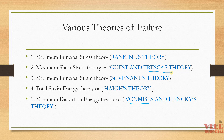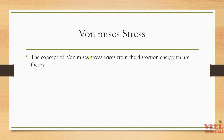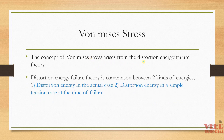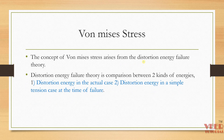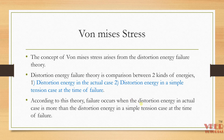Let's understand what the Von Mises Theory is. According to the Von Mises Theory, the concept of Von Mises Stress arises from the Distortion Energy Failure Theory. This theory compares two kinds of energy: the distortion energy in the actual case and the distortion energy in a simple tension case. According to this theory, failure occurs when the distortion energy in the actual case is greater than the distortion energy in the simple tension case.